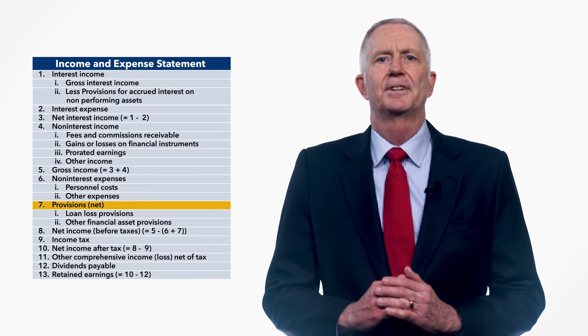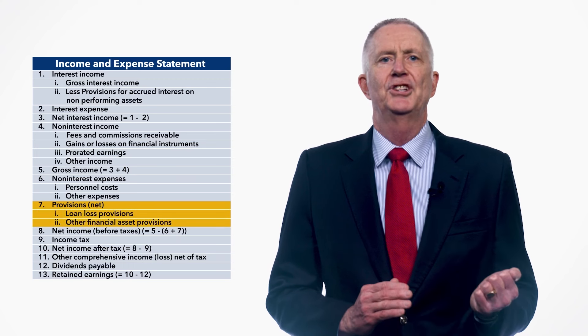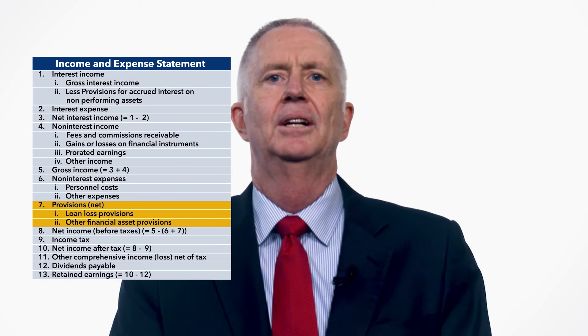Provisions, line 7, are subdivided into loan loss provisions and other financial asset provisions. Loan loss provisions are net new allowances for losses that deposit takers make in the reporting period. The amount will reflect either a net increase in expected credit loss, or ECL, which is an expense, or a net decrease in ECL, which is income. Other financial asset provisions include the expense incurred to establish an allowance for ECL for any financial assets other than loans which are within the scope of IFRS 9.